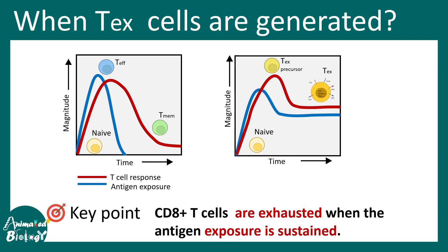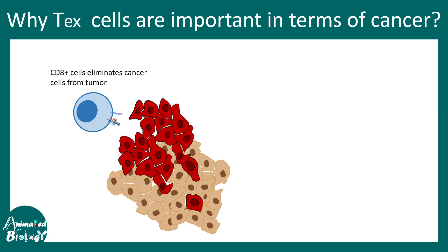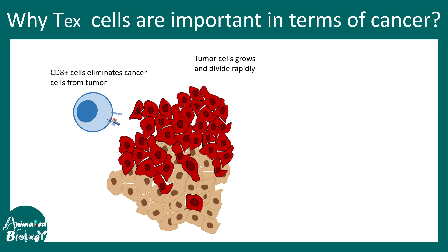CD8 positive T cells become exhausted when antigen exposure is sustained. In cancer, tumor cells grow aggressively and totally outcompete these cytotoxic T cells — which is why it's so difficult for the immune system to eliminate tumors. As the T cell kills one tumor cell, many more are aggressively proliferating. After a point the T cells reach saturation and become exhausted.